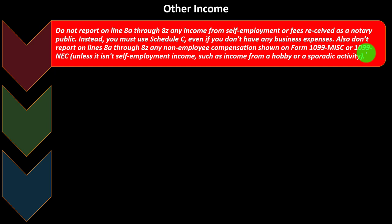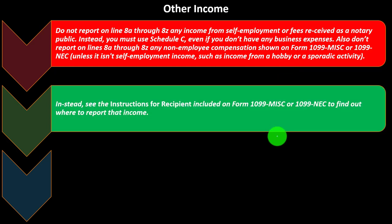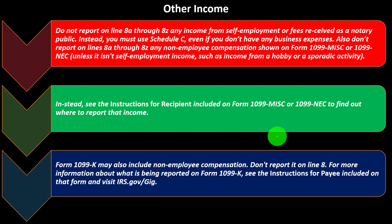You might not be subject to self-employment tax if it doesn't qualify as a business. For example, if you have a hobby — you're not trying to generate profits, you might have more losses than revenue — it might be treated as a hobby. In that case, you might be able to report the income as other income rather than on Schedule C, avoiding the self-employment tax. See the instructions for Form 1099-MISC or 1099-NEC to find out where to report that income.